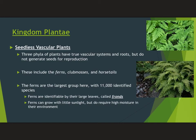Vascular plants then take on three different iterations we see today. The seedless vascular plants would be like your ferns, which have a vascular system and root system, but no seeds. Believe it or not, there are 11,000 different fern species. Ferns have big unique leaves called fronds. They don't need a lot of sun but do require a lot of moisture because they don't have a particularly well-developed root and vascular system. A lot of times your parents might spritz them with a spray bottle — they grow well on porches and don't need a lot of sunlight.